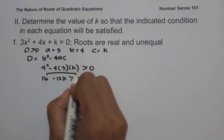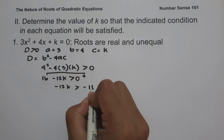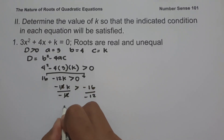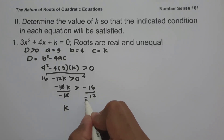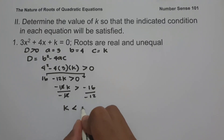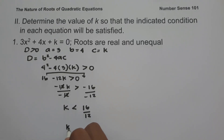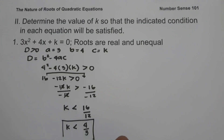So let us move 16 to the other side of the inequality. This will be negative 12k greater than negative 16. So let us divide both sides by negative 12. Since we have negative 16 divided by negative 12, it became positive, and we are going to change the inequality symbol to less than. So we are going to have k less than 16 over 12, which simplifies to k less than 4 over 3. So the value of k is less than 4 over 3. And this will be our answer.